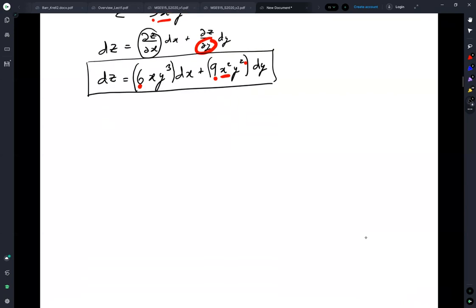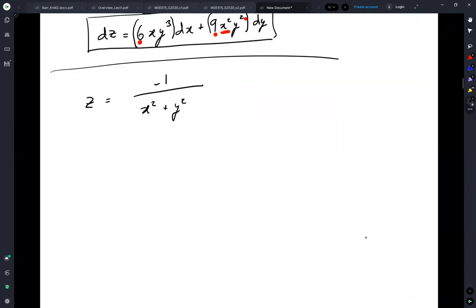Okay, another example. z is equal to minus 1 over x squared plus y squared. So taking the partial is a little more complicated. Now, partial of z with respect to x, you can think of it as the partial with respect to x of x squared plus y squared to the minus 1.